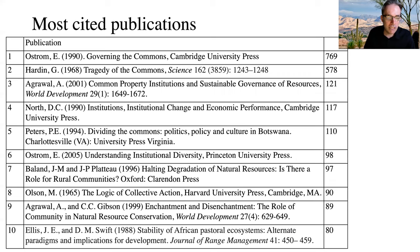Here we see the ten publications that have the most citations by the articles in the database. The two seeds are at the top of the list. We see a number of classic books on the list, such as Douglas North, Mancur Olson, and the magnum opus of Eleanor Ostrom, Understanding Institutional Diversity.